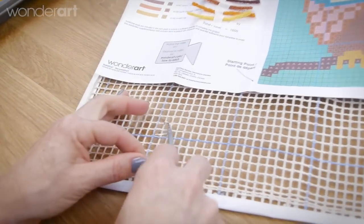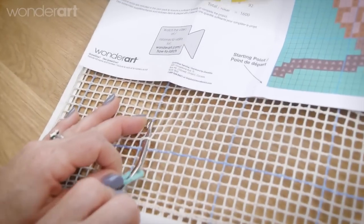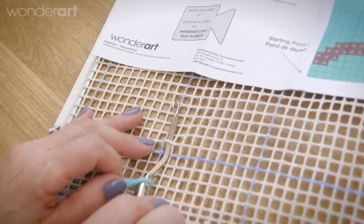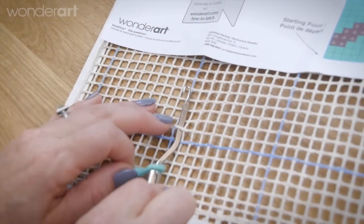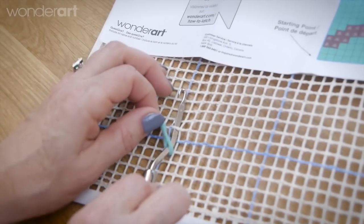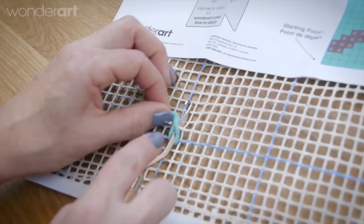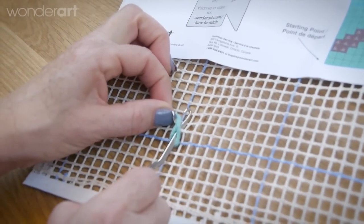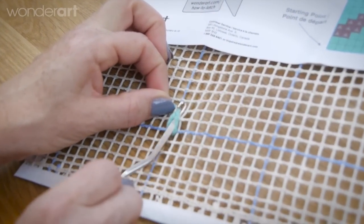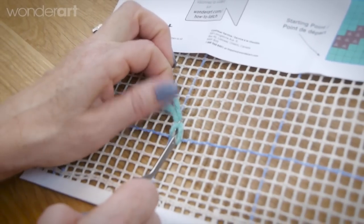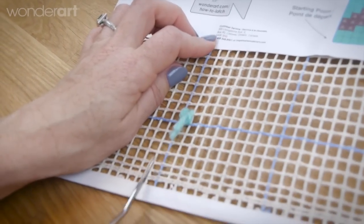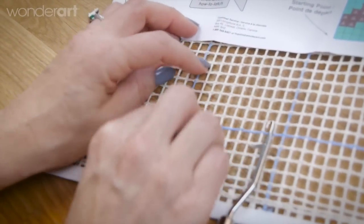And then insert the latch hook underneath one of the little grid line pieces and then you want to lay that yarn over the actual latch and pull and you'll see that the latch closes. If you let go of those tails of yarn it pulls it through, you set down your hook and then you just pull it so it's tight.